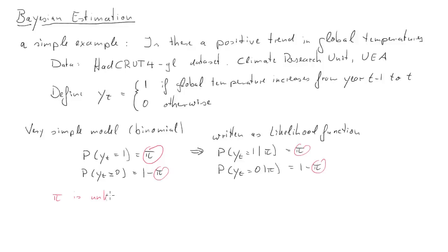Now that pi, this is of course unknown, it's an unknown parameter. And now if you also treat it as a random variable, that will be the influence of Bayesian thinking.